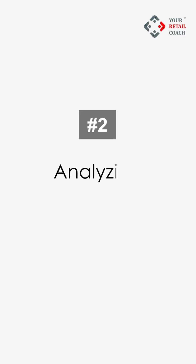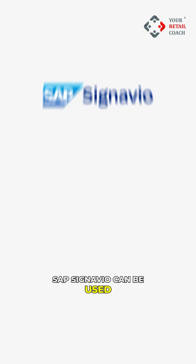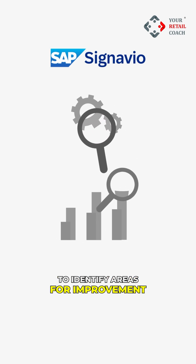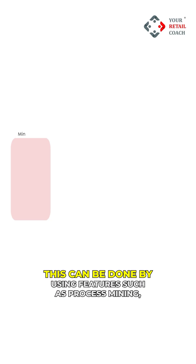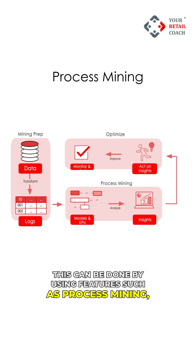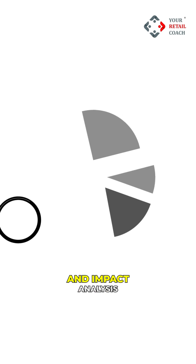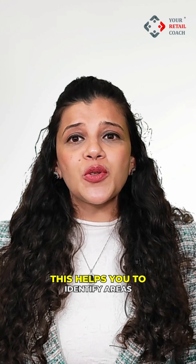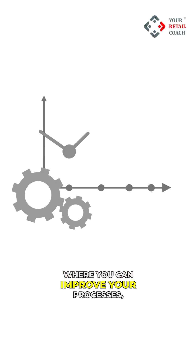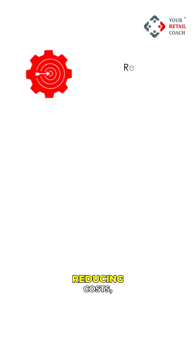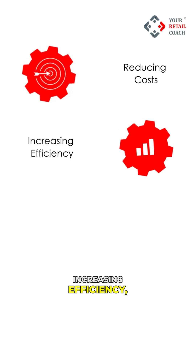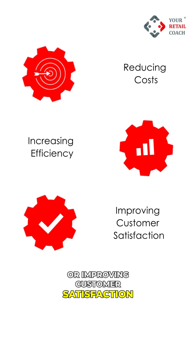2. Analyzing Business Processes. SAP Signavio can be used to analyze business processes to identify areas for improvement. This can be done by using features such as process mining, simulation and impact analysis. This helps you to identify areas where you can improve your processes such as by reducing costs, increasing efficiency or improving customer satisfaction.